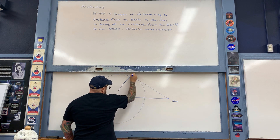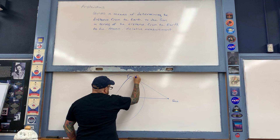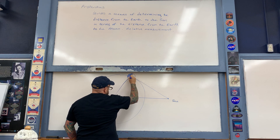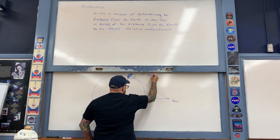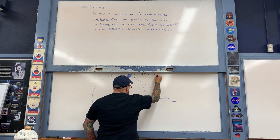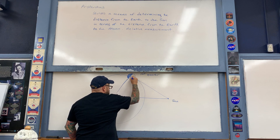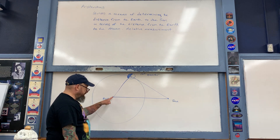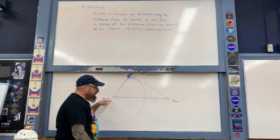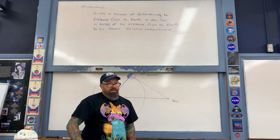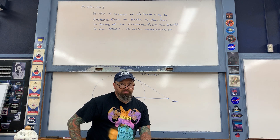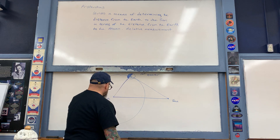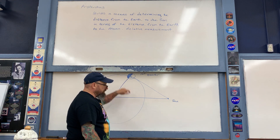The situation looks like so, and right here is first quarter moon. There is a right angle formed right here on this diagram, thereby giving us a right triangle.